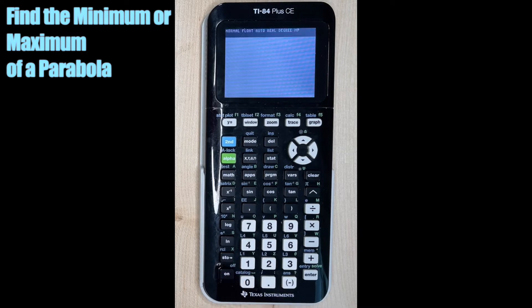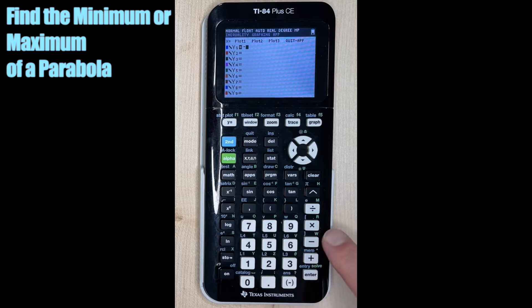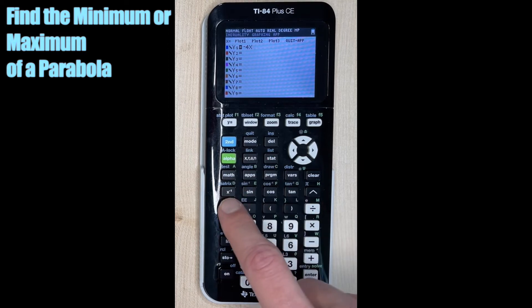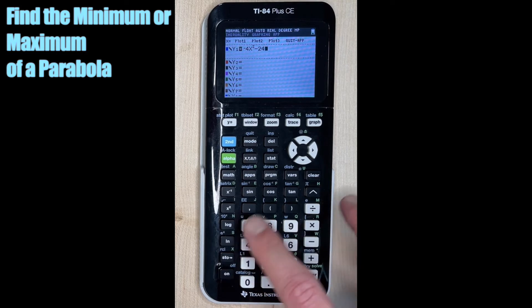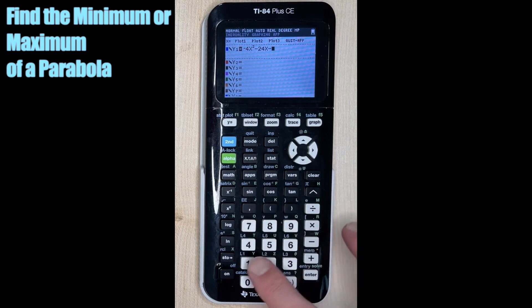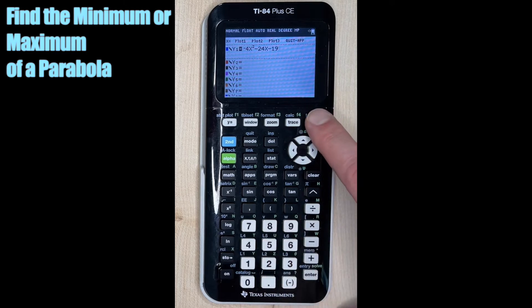Let's turn the calculator on and go into y equals. Now we're going to type in our first function. We're going to do negative. Remember, this is the negative key. This is subtraction, right? So we want negative right now. Negative 4x squared minus, now we're going to subtraction, minus 24x and minus 19. So let's go ahead and graph and see what we got.